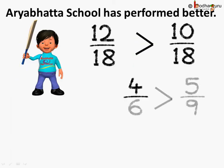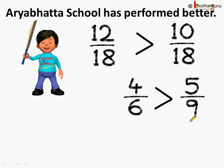So 12 by 18 is greater than 10 by 18. If we replace them with their original fractions, 4 by 6 is greater than 5 by 9. This is the way to compare fractions when the denominators are not the same — we need to make the denominators equal. Understood?